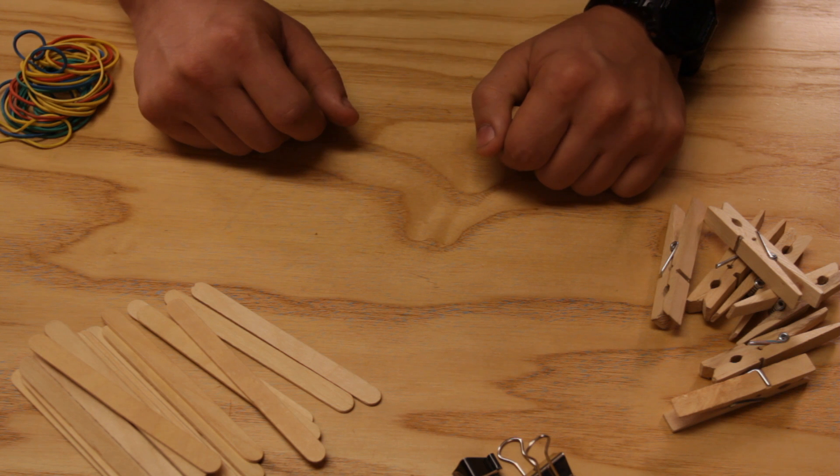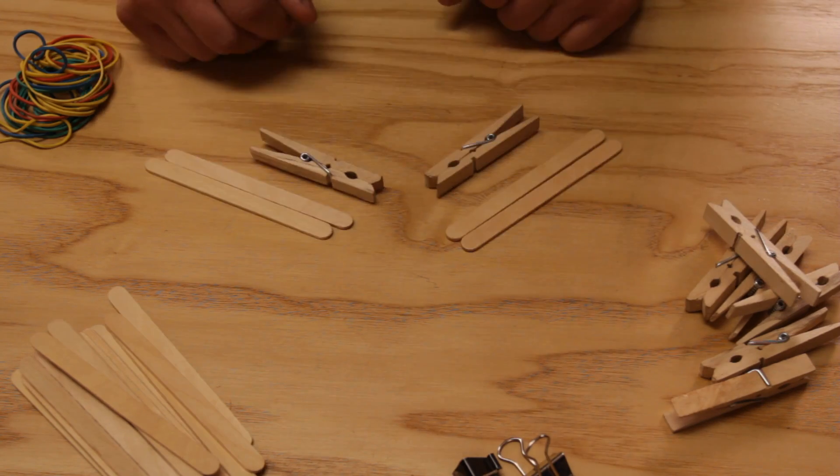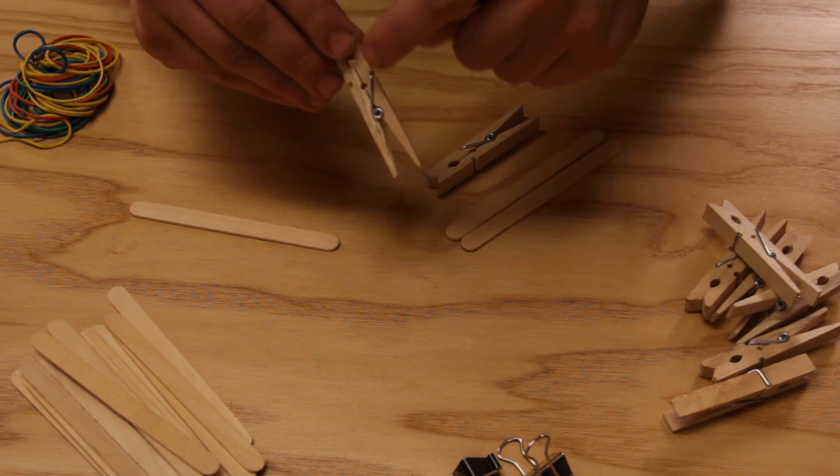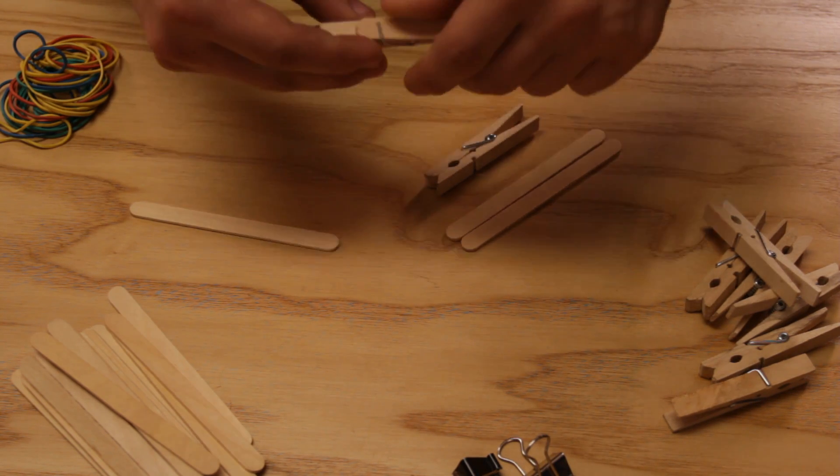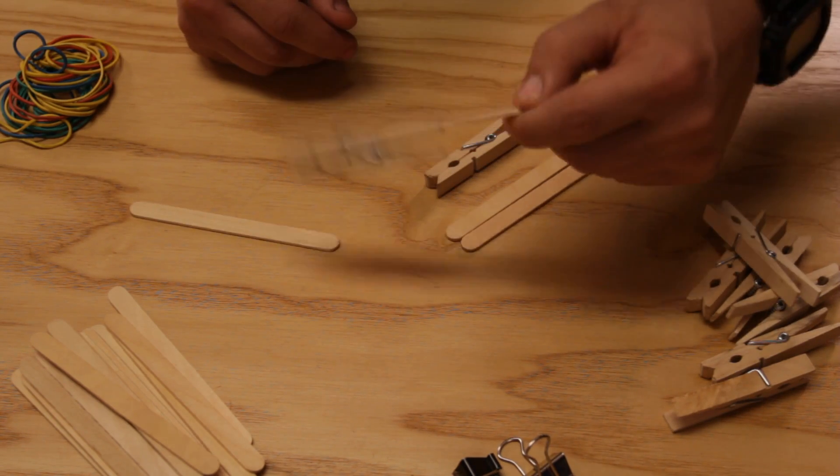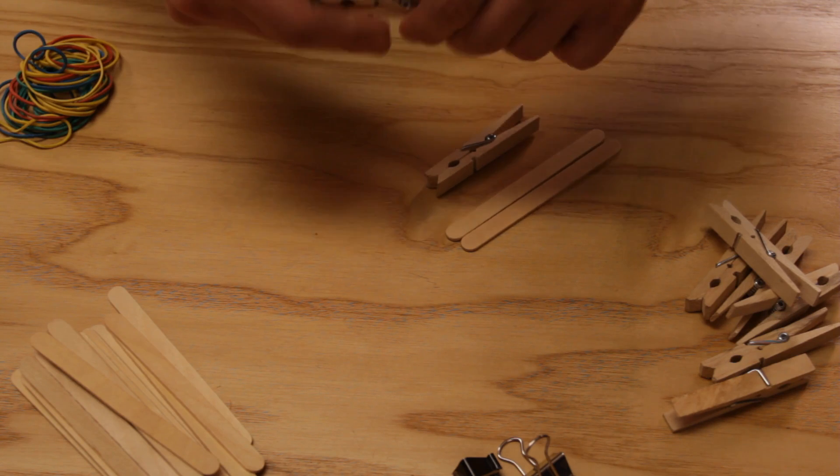The first step is to build the frame. To do so we're going to need two clothespin hangers and four popsicle sticks. Take a popsicle stick and the spring, and put the popsicle stick underneath the spring like so. Repeat on the other side.